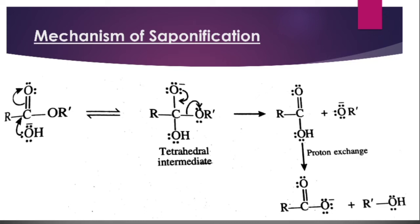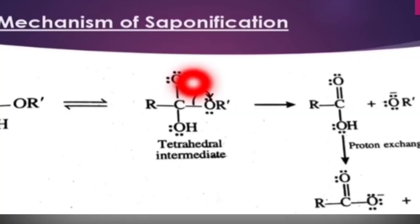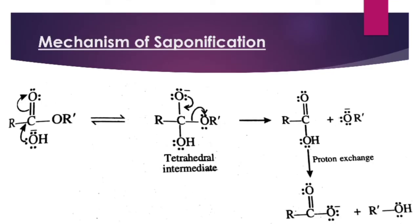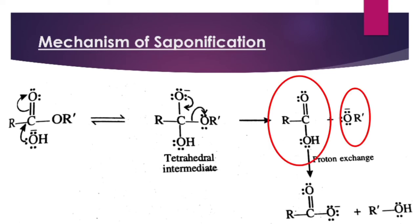Isotope-labelled studies show that alkaline hydrolysis of an ester is a two-step process involving acyl-oxygen fission and is kinetically second order. The nucleophile is OH⁻. In the first step, nucleophilic attack gives a tetrahedral intermediate, then the double bond reforms and the alkoxide leaves.